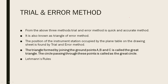Next is the triangle of error method. The triangle of error method — if you know this method, it is very quick and accurate. What we do here is: A, B, C form a triangle. The circle is passing through these three points, forming a gray triangle. The circle passing through the triangle is called the great circle. This is known as Lehmann's rule.